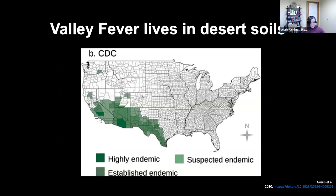Where is valley fever? Valley fever is in the desert. In the United States, it's really centered in the Southern Central Valley and parts of Arizona, New Mexico, and Texas. It does go down into Mexico and Central America, but it's really in this desert region in the Southwest.